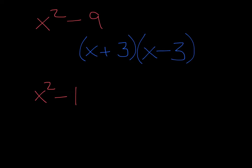For the second example, we have two terms, and you can take the square root of both of them. So it is a difference of squares problem. We set up two blank parentheses. Square root of x squared is x. Square root of 1 is 1. One parenthesis gets a plus, one gets a minus.